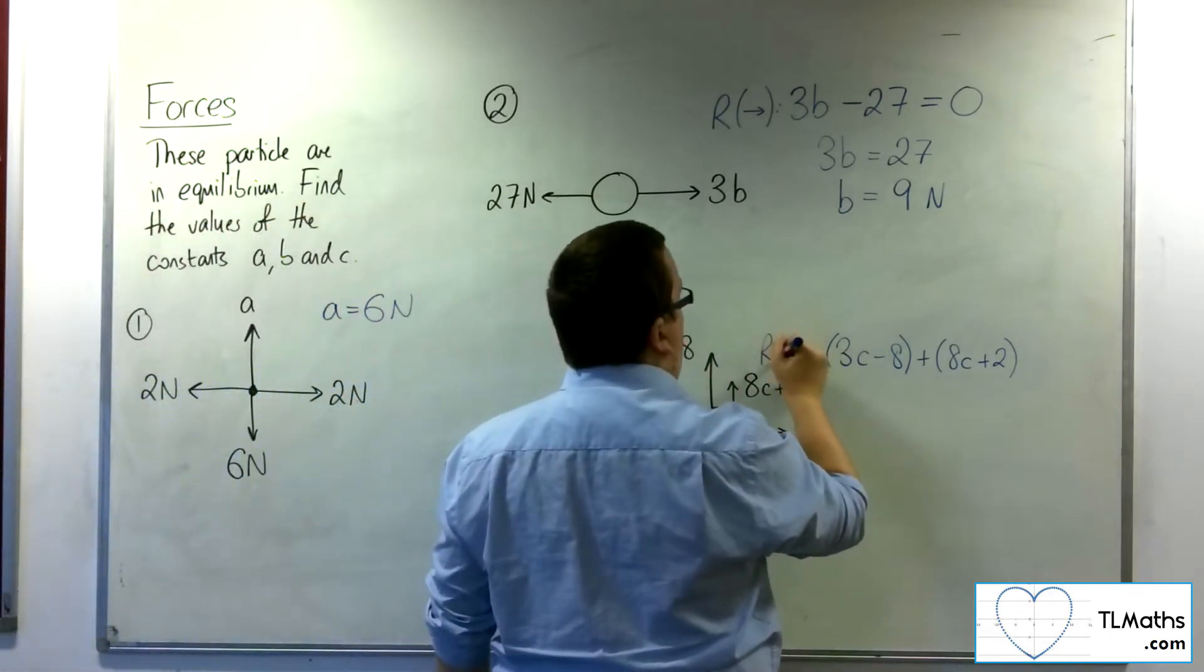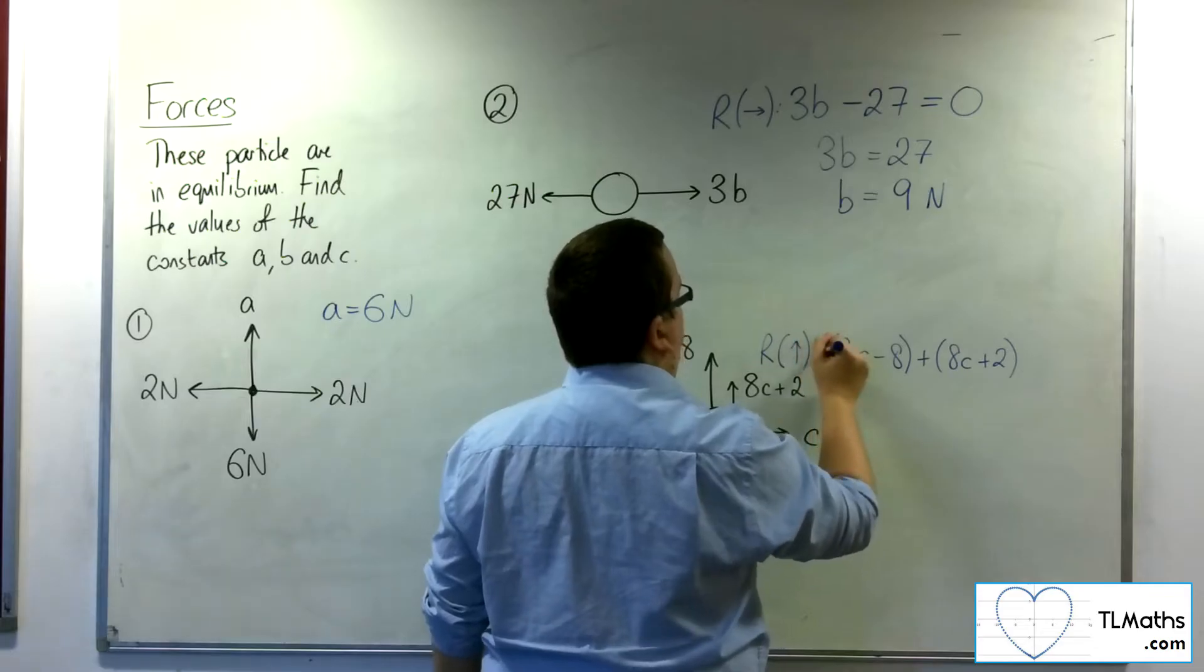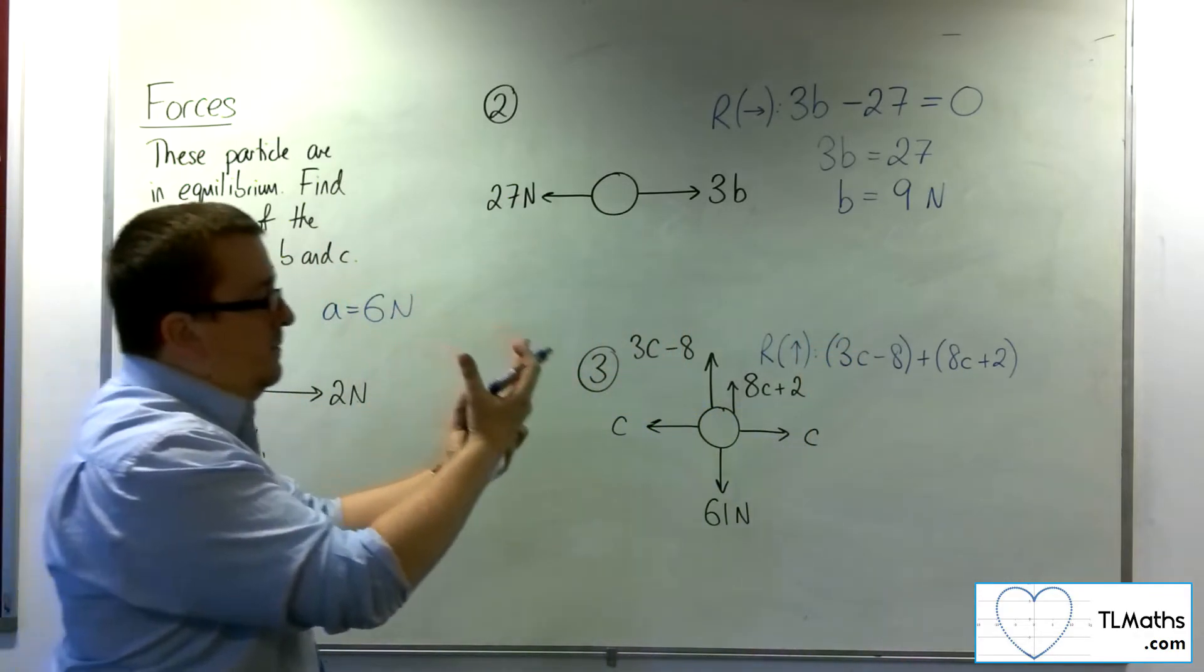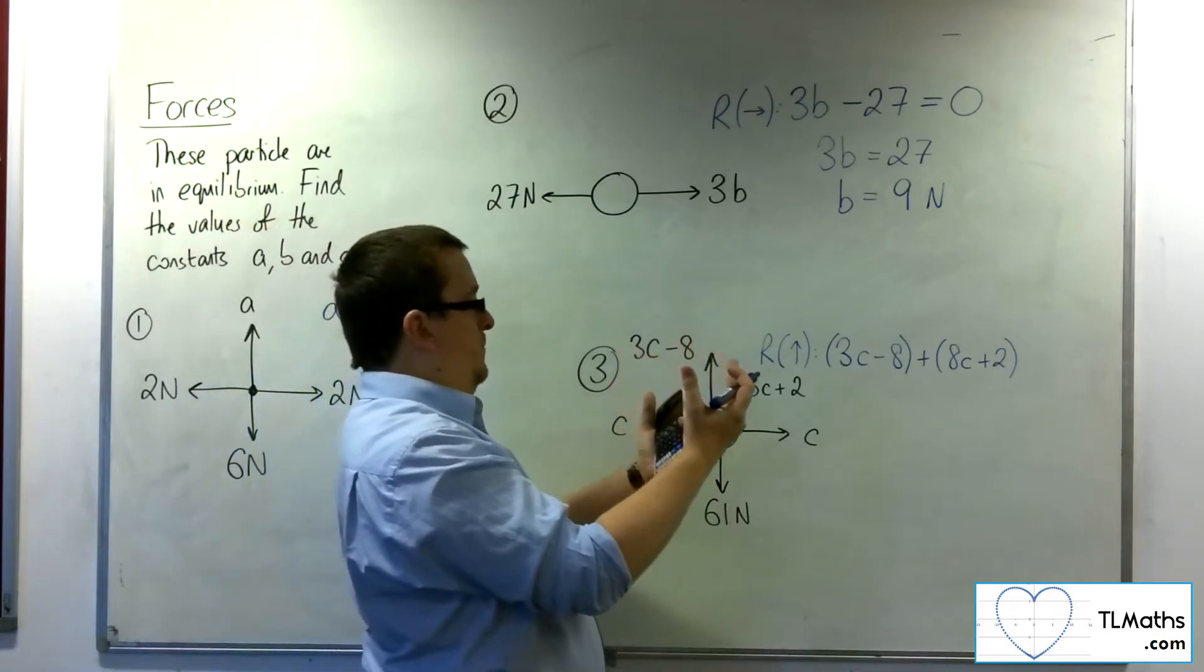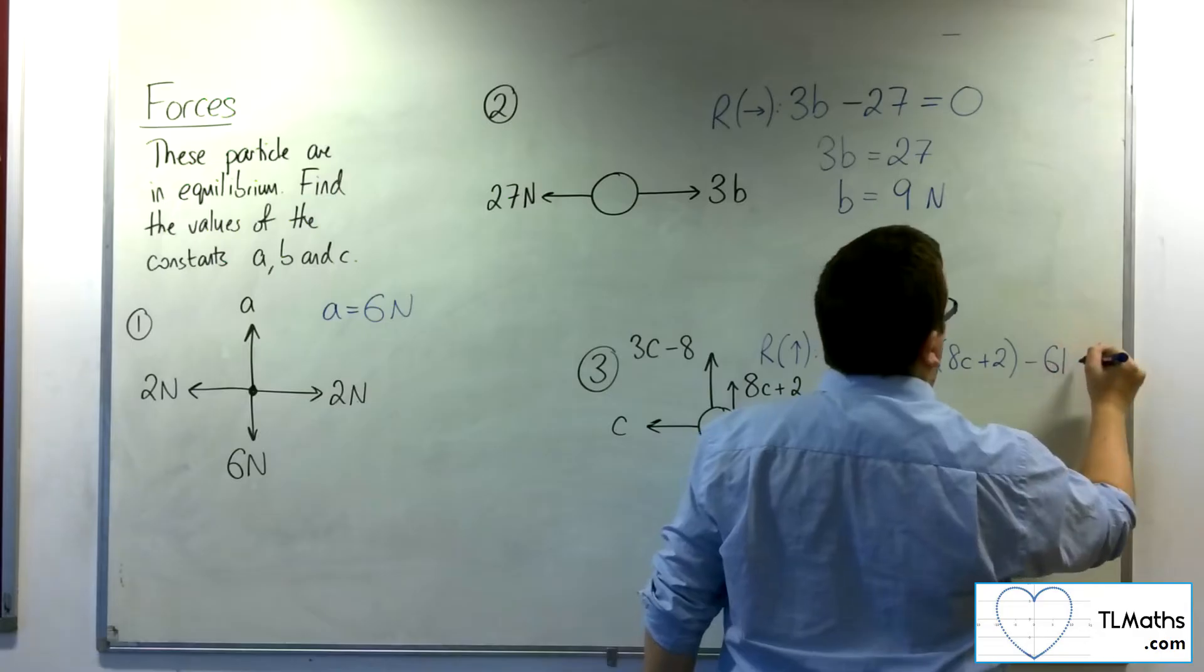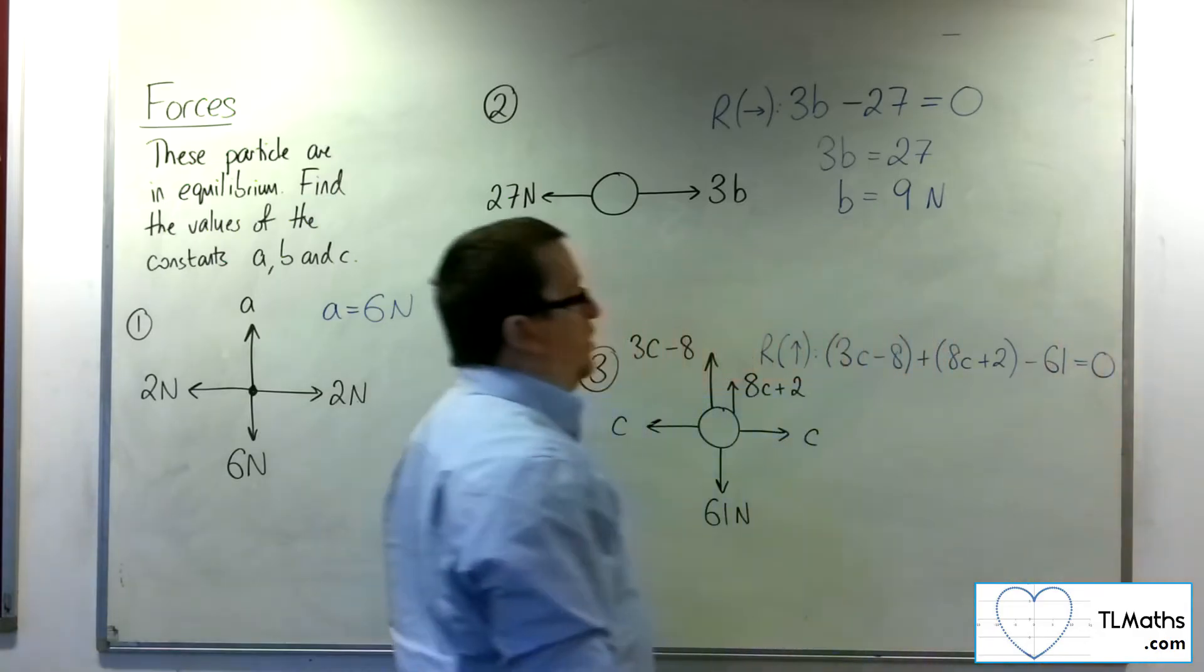Likewise, here, if I resolve upwards, then I've got the 3c minus 8, the 8c plus 2, but the 61's working against me. It's in equilibrium, so it's got to be equal to zero.